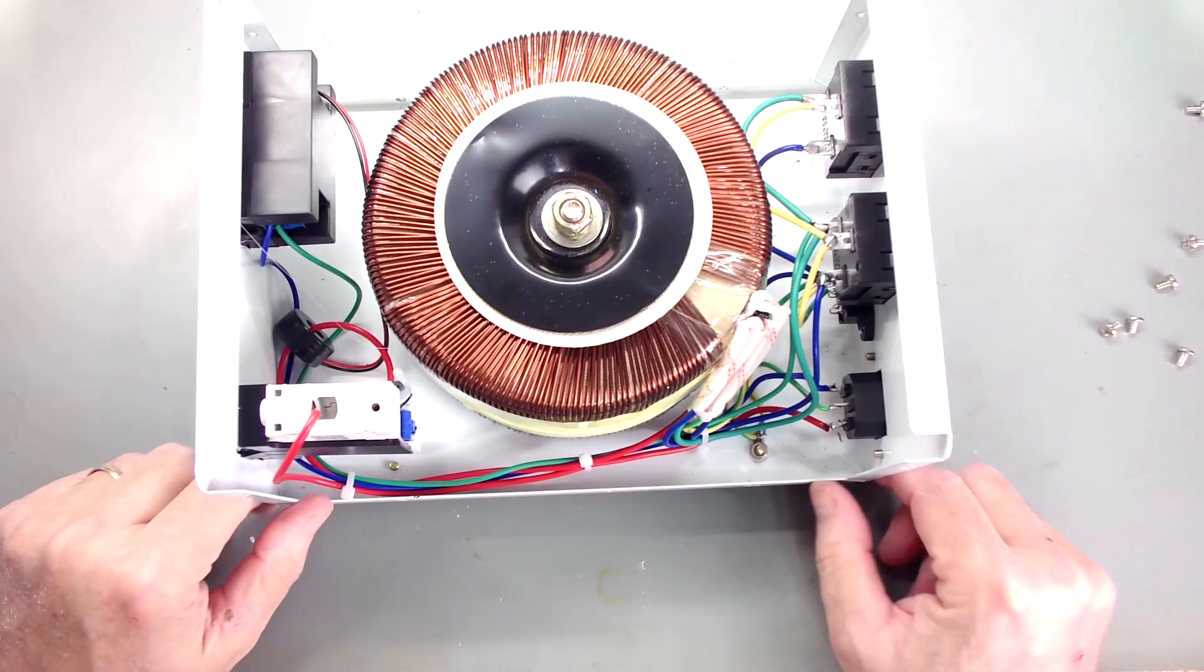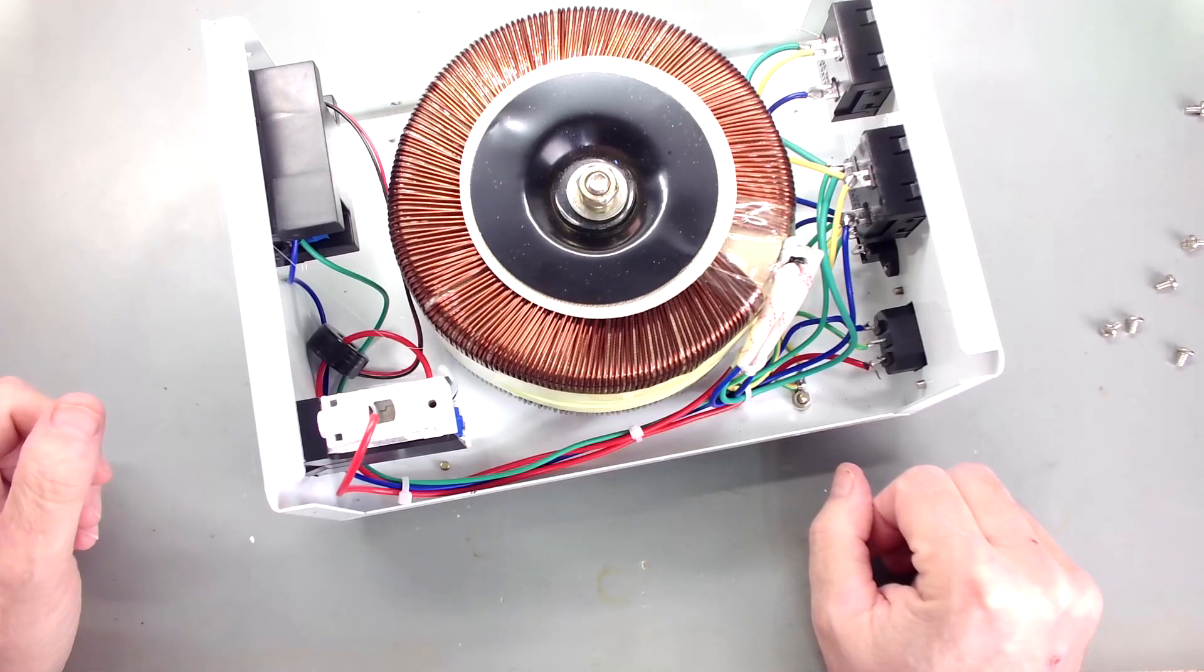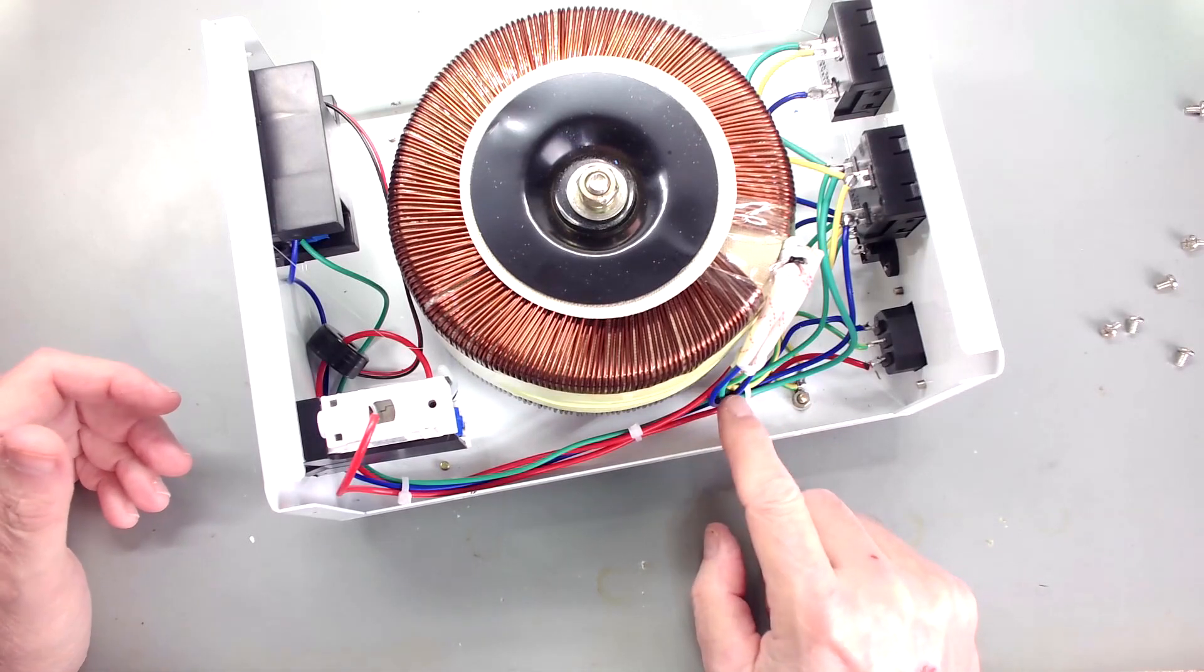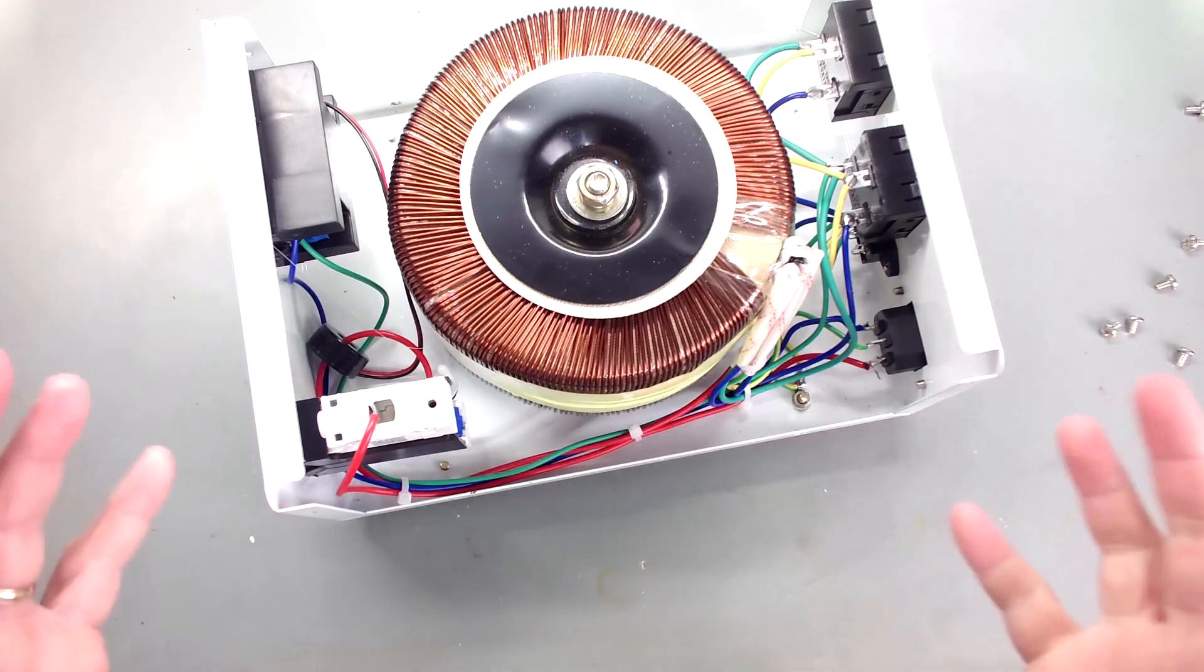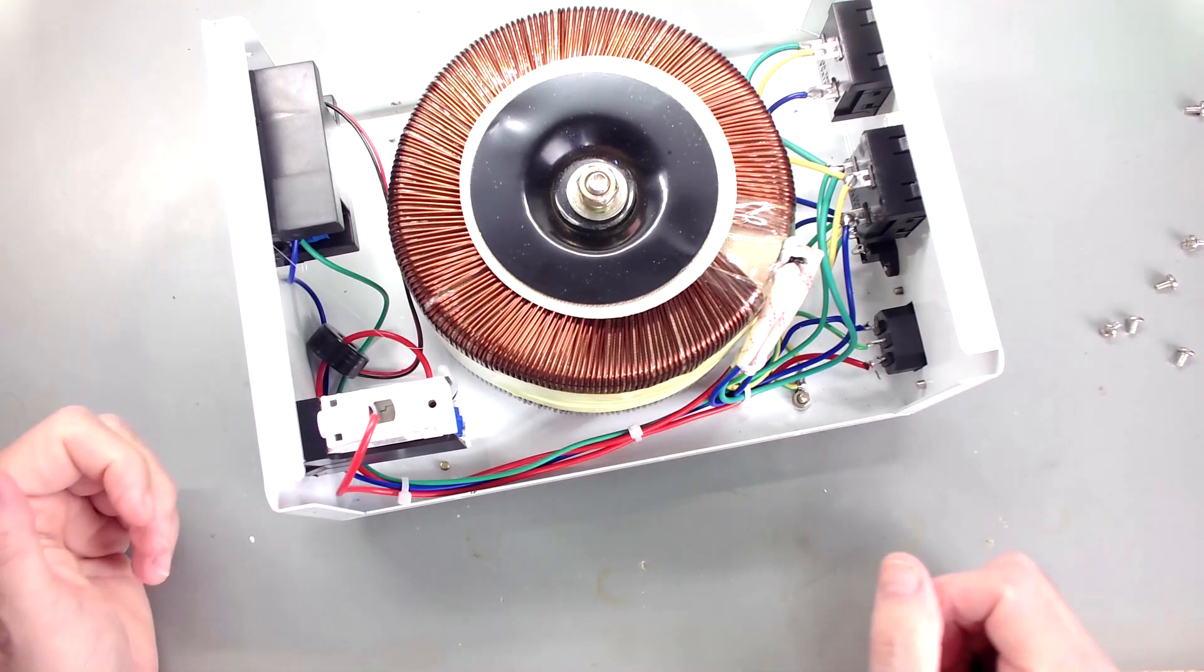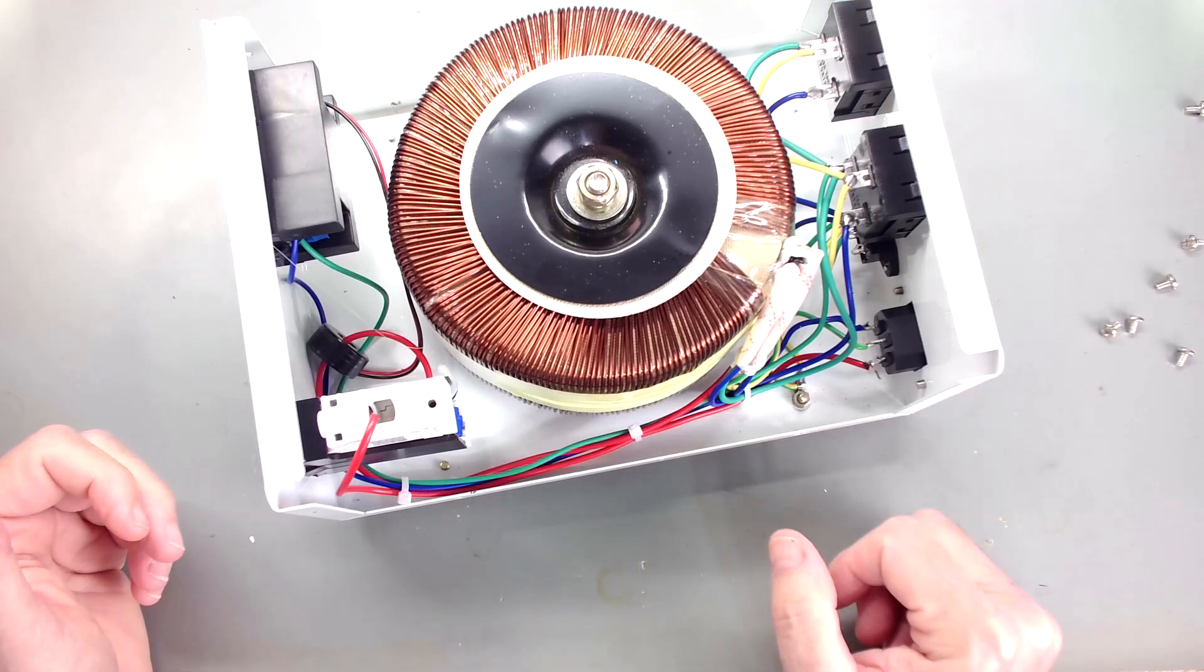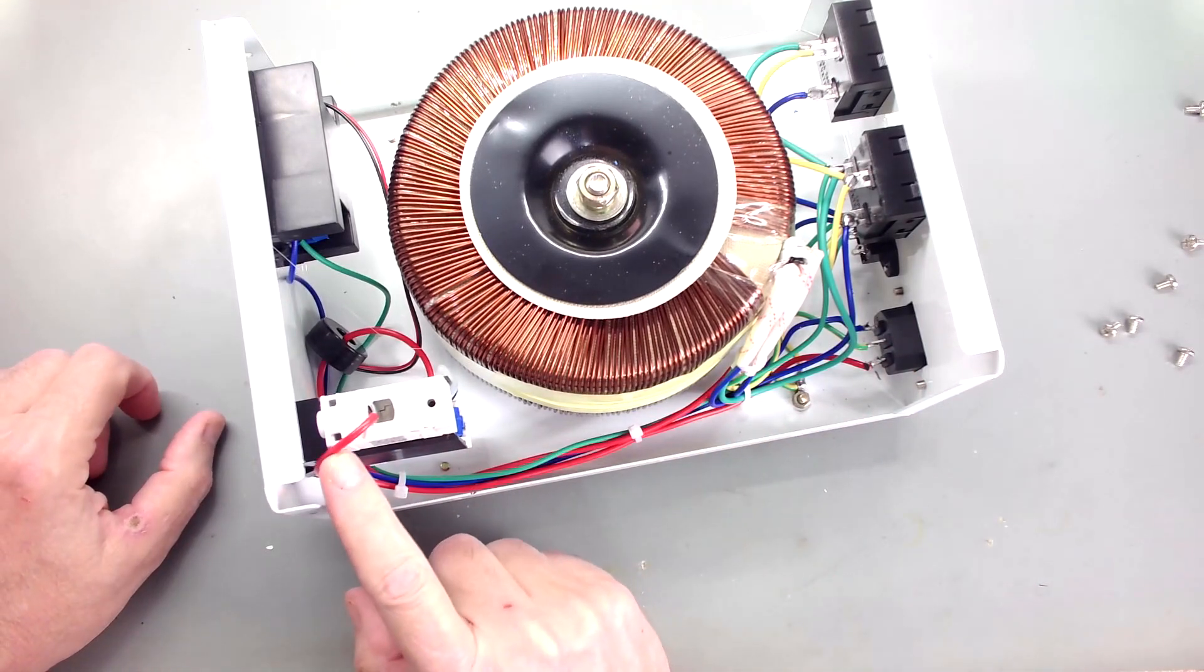And I mean, it's pretty simple. It's just a one-to-one transformer with a primary and a secondary winding. As you can see, correct this time. It is a primary and secondary. Basically it's taking whatever you put in, passing it right back out, but it's magnetically coupled. So you've got that magnetic separation of the supplies.